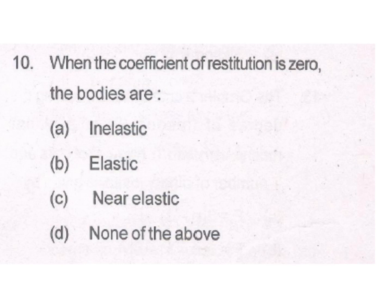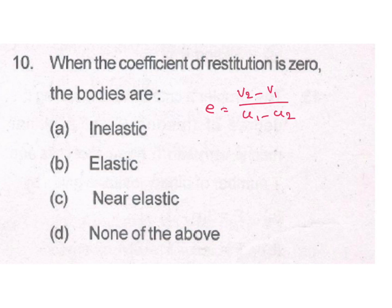When the Coefficient of Restitution is 0, the bodies are perfectly inelastic. The Coefficient of Restitution E is defined as V2 minus V1 divided by U1 minus U2, where U1 and U2 are the two bodies' initial velocities before impact, and V1 and V2 are the bodies' velocities after impact. E equal to 0 is for a Perfectly Inelastic body.